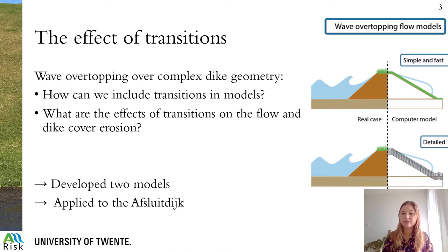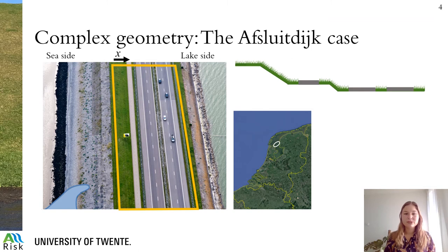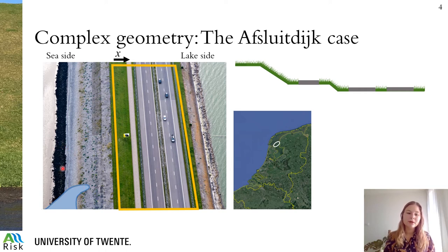First, we developed a simple and fast analytical model, with which we can compute the erosion during an entire storm. We also developed a detailed hydrodynamic model, which can provide insights on the hydraulic forces working on the dike cover. We applied both models to the Afsluitdijk. The Afsluitdijk is a dam between the Wadden Sea and Lake IJssel in the Netherlands, and the top view can be seen in the figure to the left. The Wadden Sea side, where the waves come from, is protected by blocks and hard revetments.